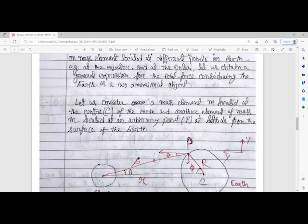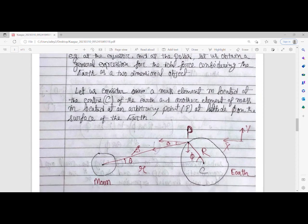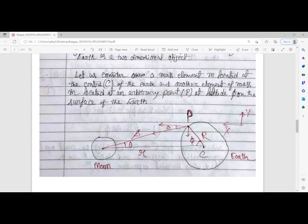We consider a mass element M located at the center of the Earth and another element of mass m located at an arbitrary point at latitude φ on the surface of the Earth.